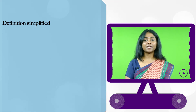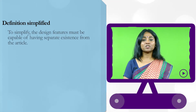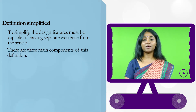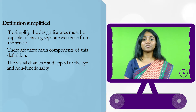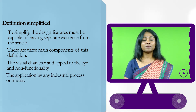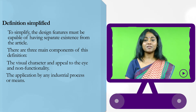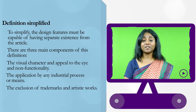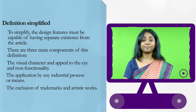Simplifying the design: design features must be capable of having a separate existence altogether from the article. There are three main components: the visual character and the appeal to the eye and non-functionality; the application by any industrial process or means; and finally, the exclusion of trademarks and artistic works. That will help you understand what is defined as an industrial design.